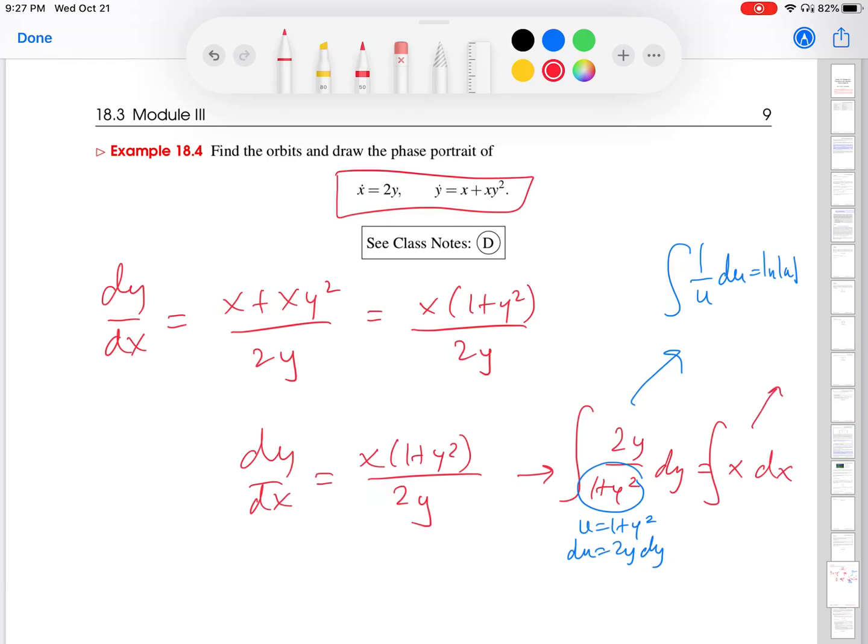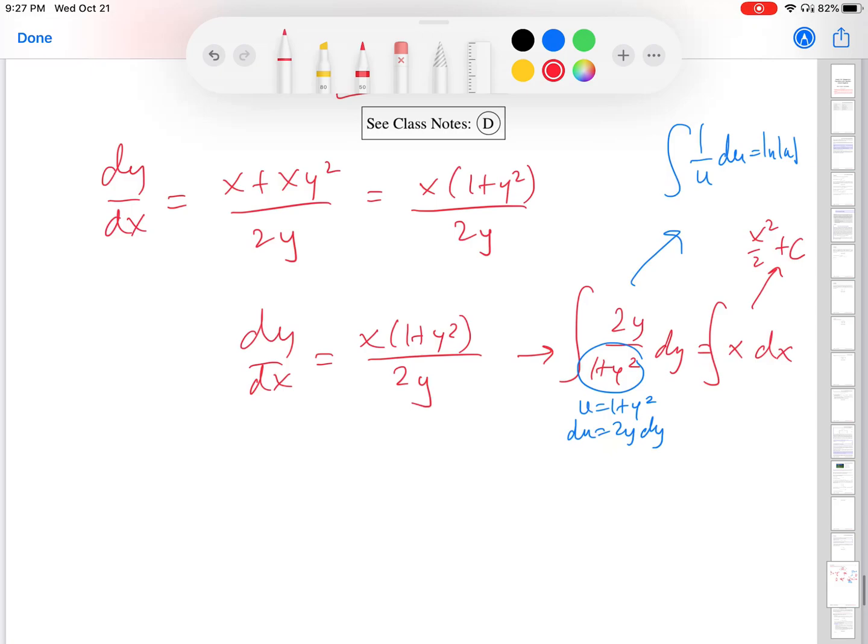This integral on the right-hand side is x squared over 2. And there's that plus c. So what I get is once I substitute back in what my u is from here, I get ln of 1 plus y squared equals x squared over 2 plus c. I don't need the absolute values because 1 plus y squared is never negative. And I'm going to exponentiate to get rid of the ln. So I get e to the x squared over 2 plus c.